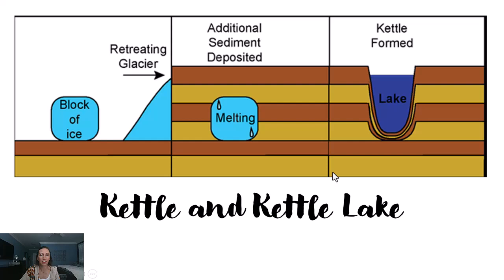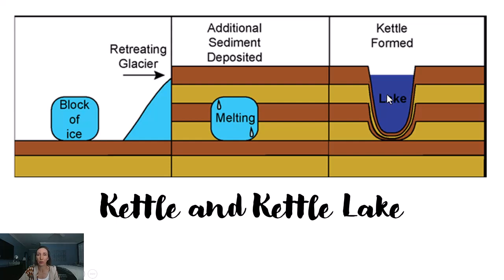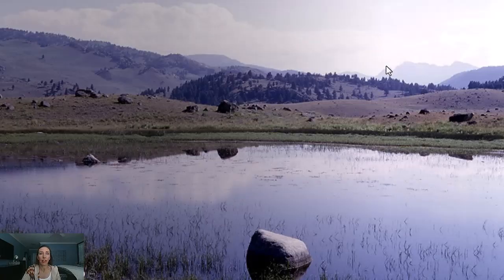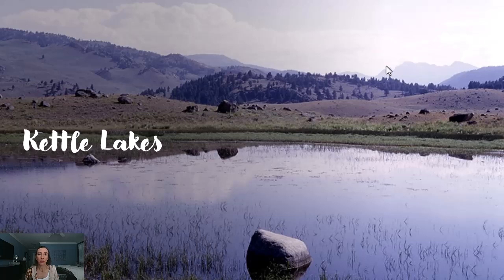Kettle and kettle lake formations are a fun one. What we're looking for is a low depression with water in it. When a retreating glacier leaves behind a big chunk of ice — like an iceberg on land — sediment may deposit on top of it. As that block of ice melts, the overlying material collapses down, forming a depression. That depression can fill with rain and snow to form water. The depression itself is the kettle; when it fills with water, it becomes a kettle lake.